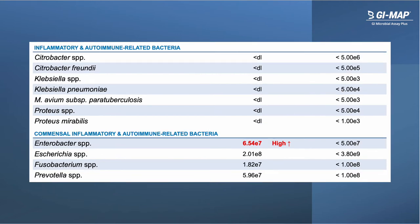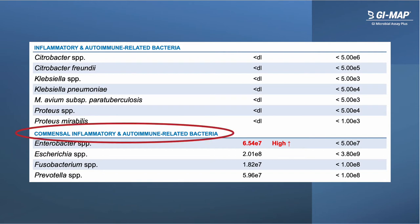The next section of microbes is the inflammatory and autoimmune related bacteria. These are bacteria associated with inflammation — they may contribute to inflammation but also may thrive under inflammatory conditions, and they've been associated with a variety of inflammatory and autoimmune conditions. Note that the next section titled commensal inflammatory and autoimmune related bacteria includes bacteria that are present commonly in most people, often contributing to beneficial functions at normal levels, but when elevated may also be associated with and contribute to inflammation.